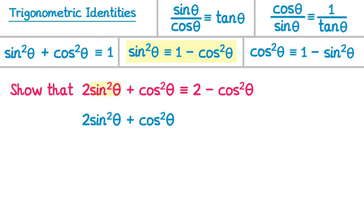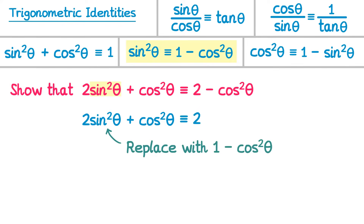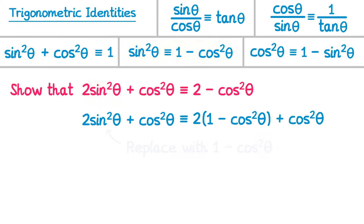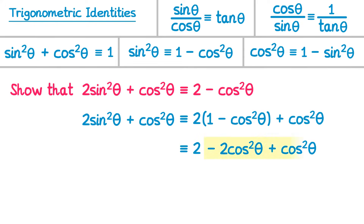We write out the left hand side again, replacing sine squared theta with 1 minus cos squared theta. So we have 2 lots of (1 minus cos squared theta), plus cos squared theta. Expanding the bracket: 2 times 1 is 2, and 2 times minus cos squared theta is minus 2 cos squared theta, then plus cos squared theta at the end. Minus 2 cos squared theta plus cos squared theta is minus 1 cos squared theta, so we end up with 2 minus cos squared theta — which is exactly the right hand side.